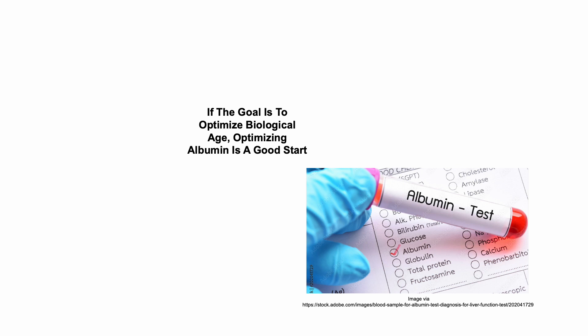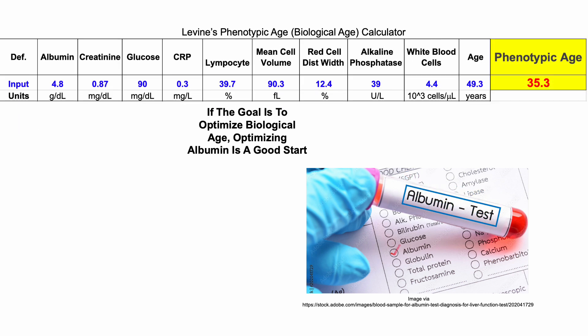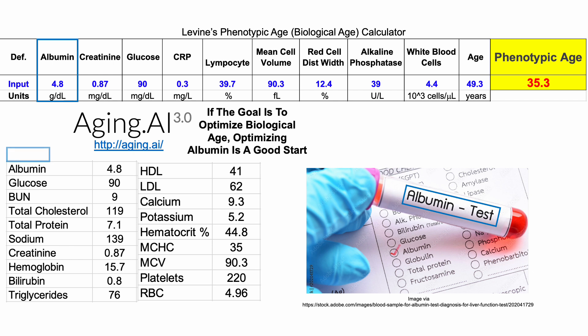If the goal is to optimize biological age, optimizing albumin is a good start. That's because albumin is included in at least two blood-based biological age calculators, including Levine's biological age calculator as shown there, and also in Aging.ai as shown there.